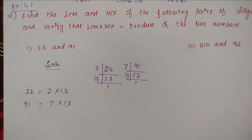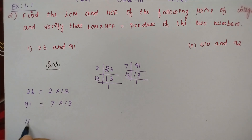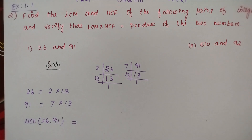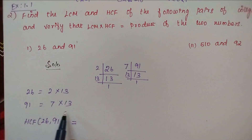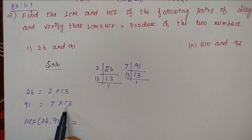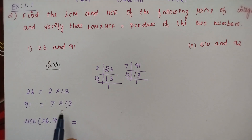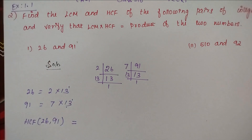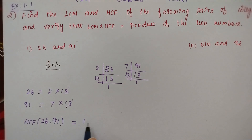Now we find the HCF of 26 and 91. The common factor between 2×13 and 7×13 is 13. So HCF of 26 and 91 is equal to 13.